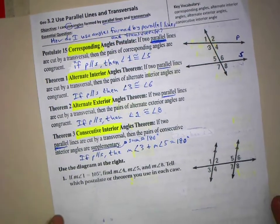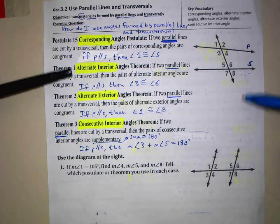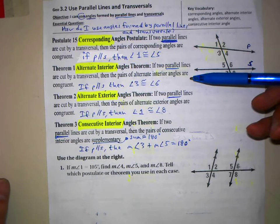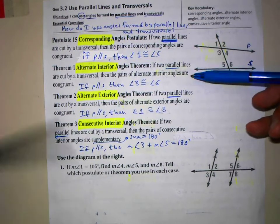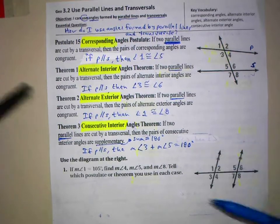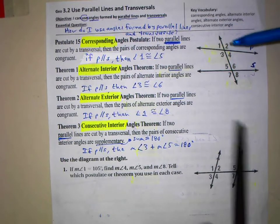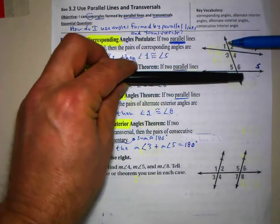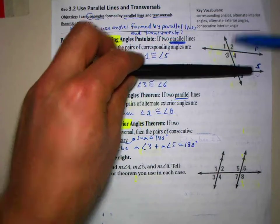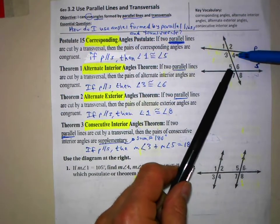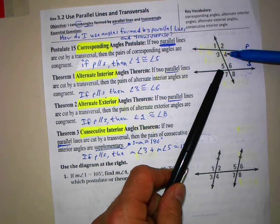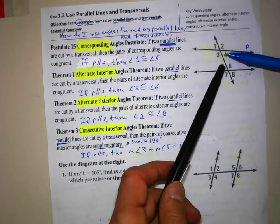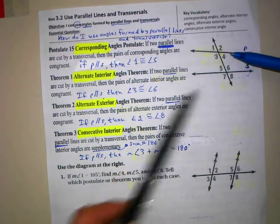Alternate Interior Angles: if two parallel lines are cut by a transversal, then the pairs of alternate interior angles are also congruent. Here's your transversal. 'Alternate' means you're on alternate sides of the transversal. 'Interior' means you're inside, between the two lines. Alternate interior would be angles 4 and 5. If lines P and S are parallel, then angles 4 and 5 are going to be congruent.